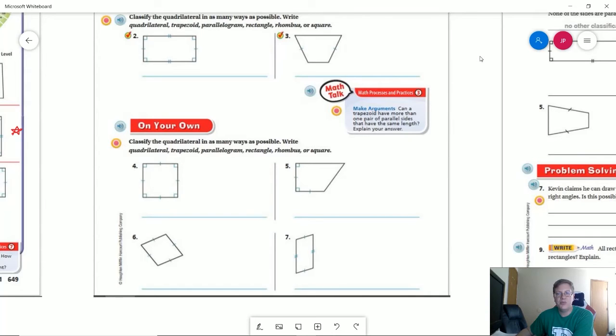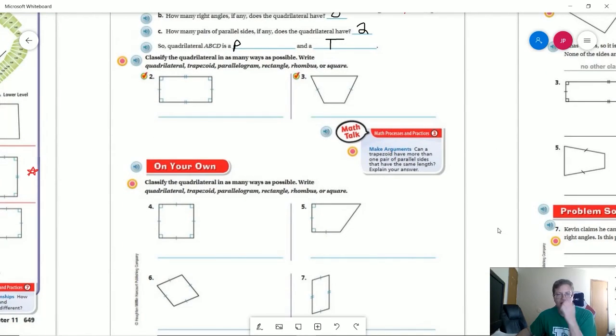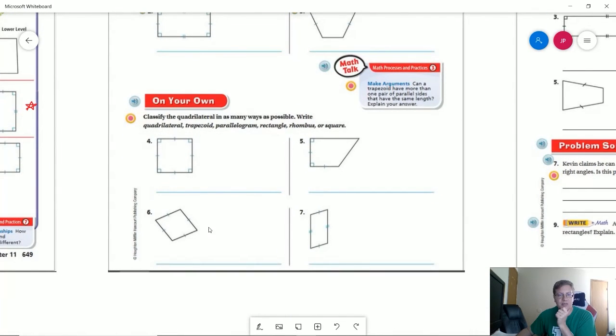Number five, we are going to have a quadrilateral and a trapezoid. We only have one pair of parallel sides. They are not matching in length.